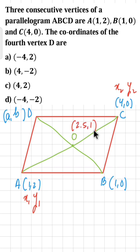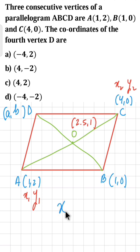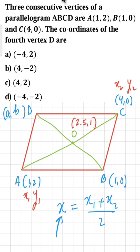Now let's come to BD. The midpoint of BD is O. We know the coordinates of O and we know the coordinates of B; we need to find coordinates of D. We will apply the midpoint formula on BD. The midpoint formula gives x = (x1 + x2)/2. The x-coordinate of O, which is 2.5, is called the abscissa or simply x — this is our x (midpoint value).